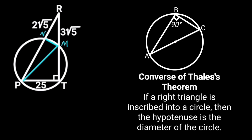Also, from the converse of Thales' theorem, observe that triangle PMN is a right triangle with angle MNP equal to 90 degrees, and PM as the diameter.